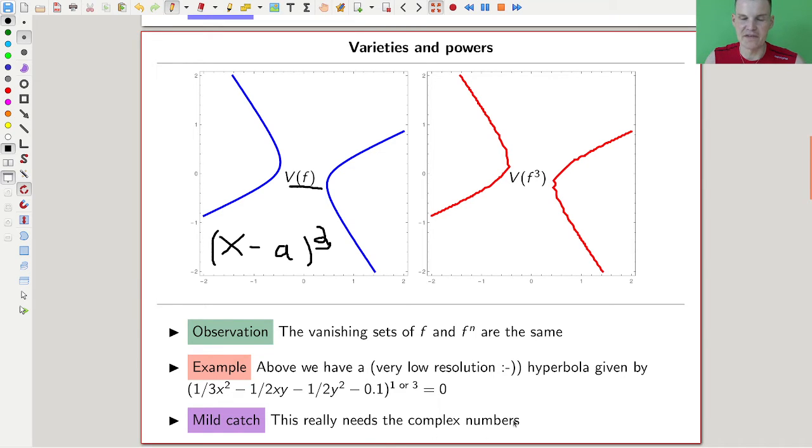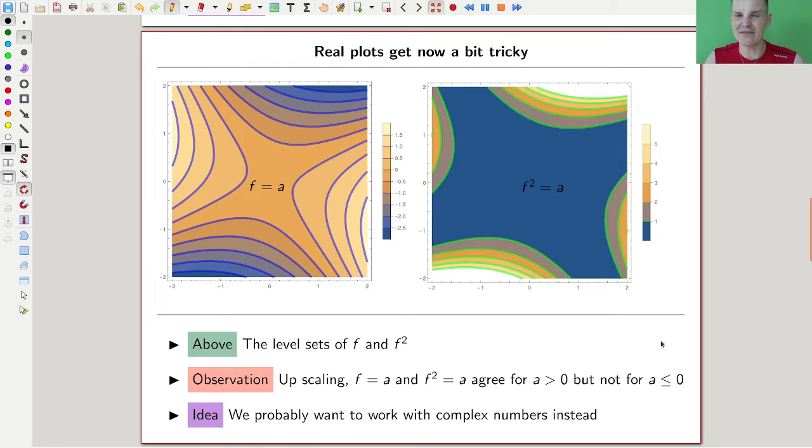If something is a root of something like x minus a, so a would be a root of x minus a, but a is also a root of x minus a squared and a is a root of x minus a cubed, and so on. We really can't tell the difference here.